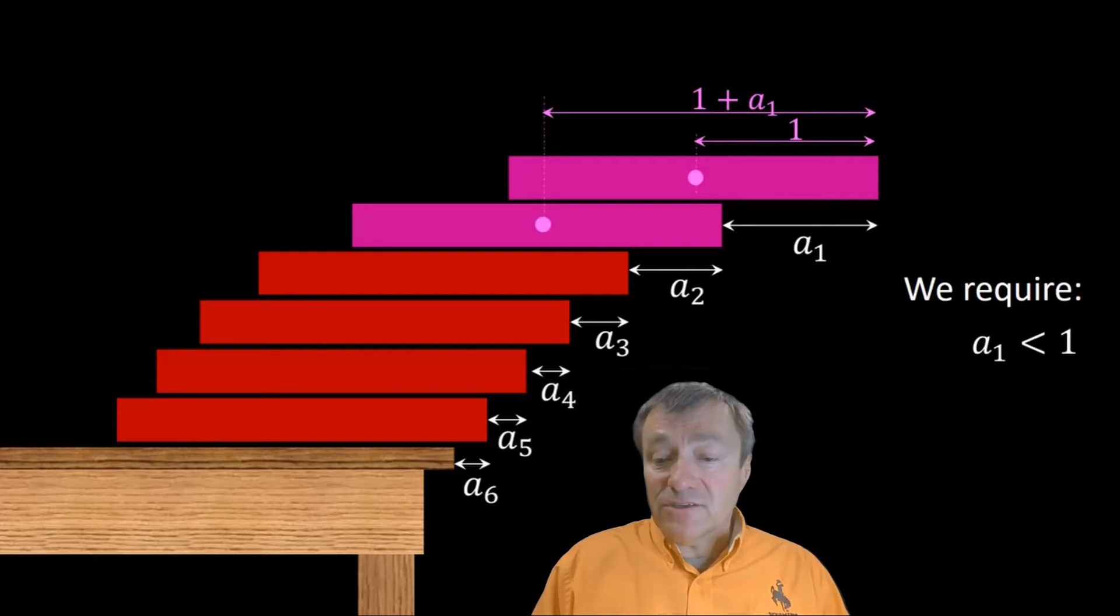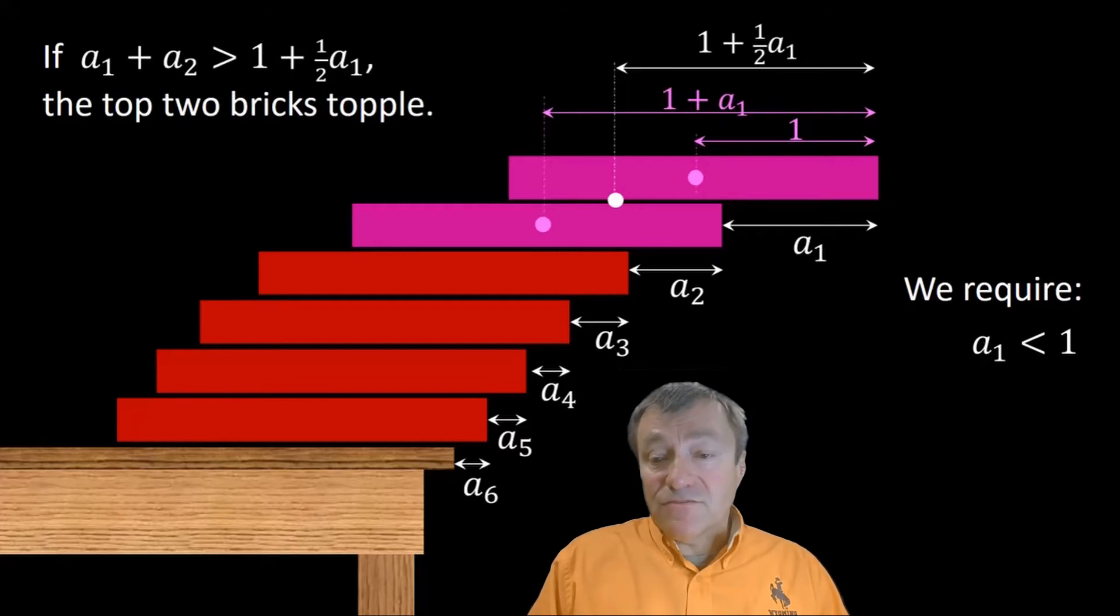Measuring from the far right of the stack, the top brick has center of mass one unit to the left, the second brick has center of mass A1 units to the left of that, so that's at one plus A1 units to the left of the far right edge. To find the center of mass of the top two bricks together, you simply average their centers of mass. That gives a distance, one plus A1 over two to the left of the far right edge. I need this combined center of mass to lie over a point of the third brick. That says that A1 plus A2 must be less than one plus A1 over two. So that's a new condition, and it says A1 plus 2A2 is less than two when you simplify.